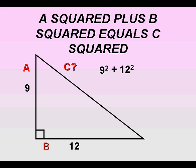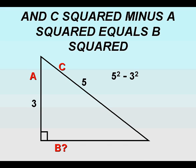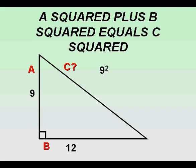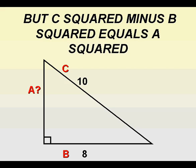A squared plus B squared equals C squared. And C squared minus A squared equals B squared. A squared plus B squared equals C squared. But C squared minus B squared equals A squared.